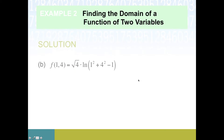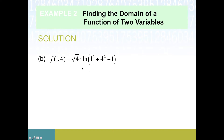Broccoli has been eaten, now it's time for dessert: f of one comma four. As noted in the previous video, the order actually matters — the first input is x, the second is y, and they often go in lexicographical order. We plug ones in for all the x's and fours for all the y's, and we end up getting two out in front and then a natural log of 16.